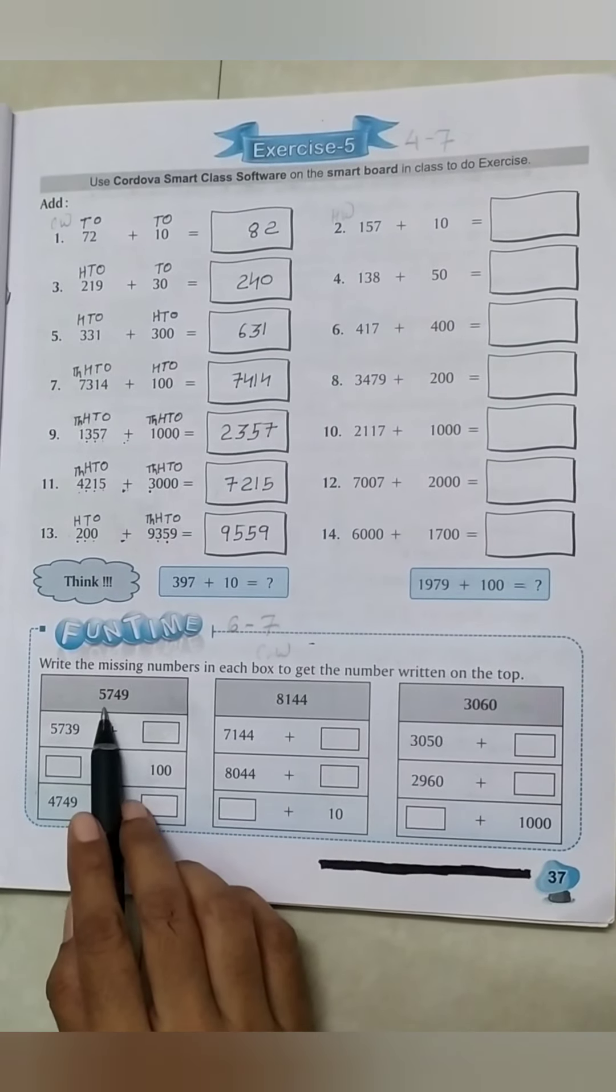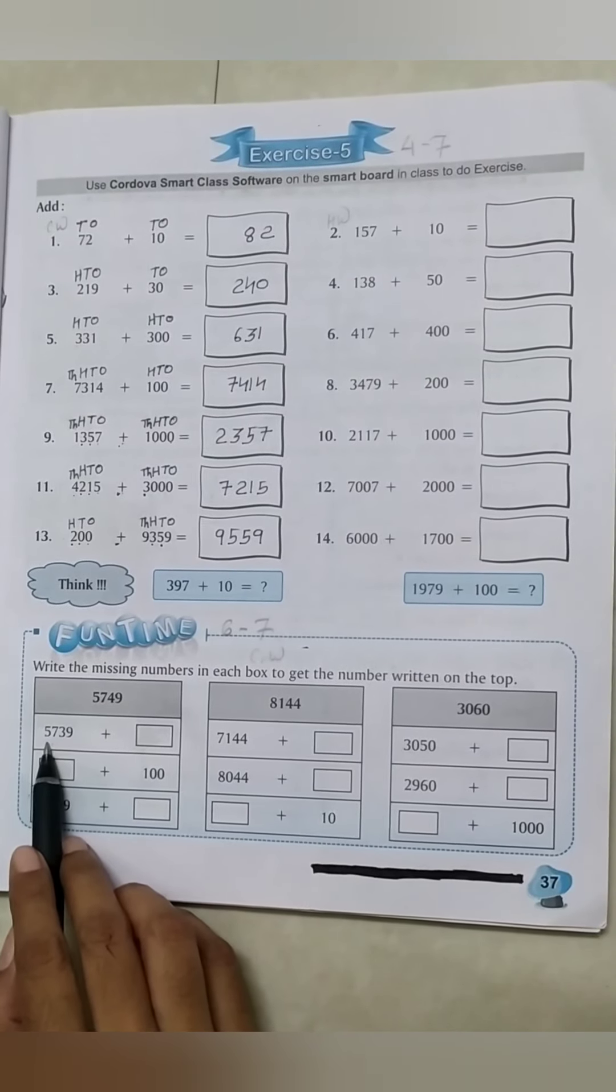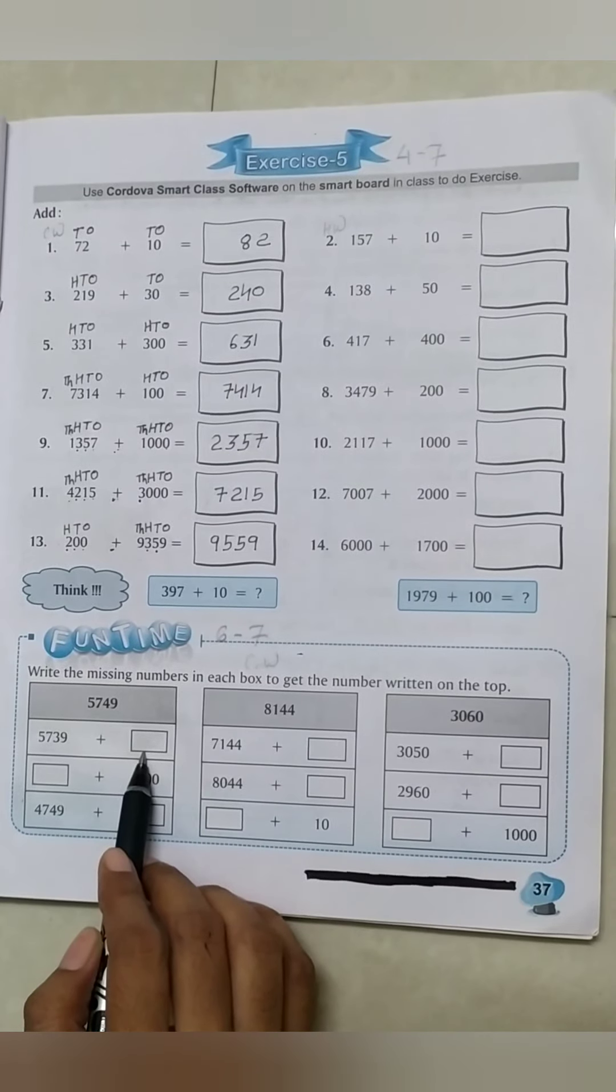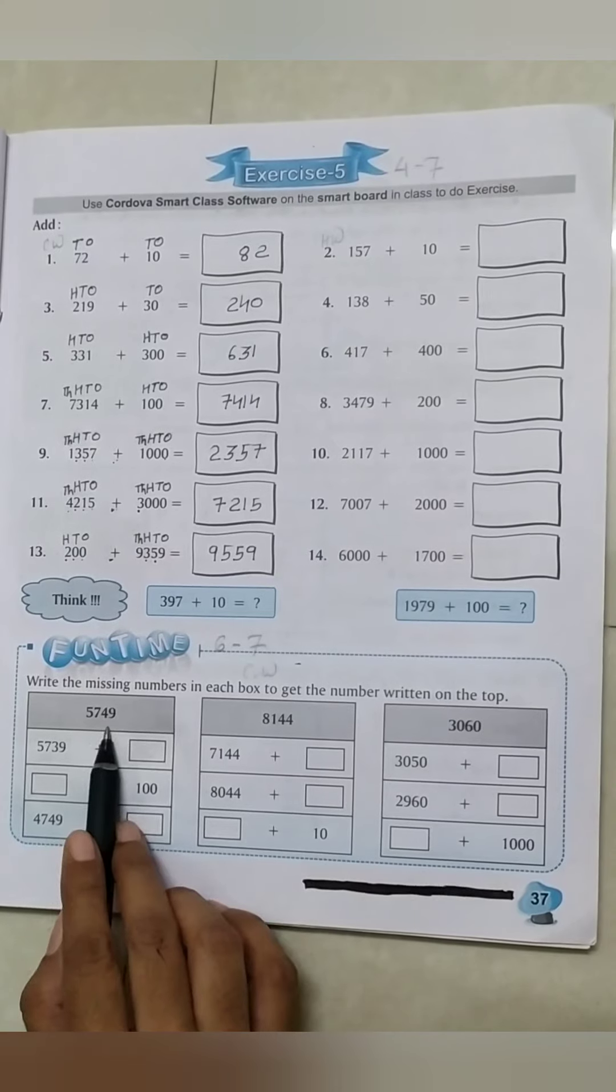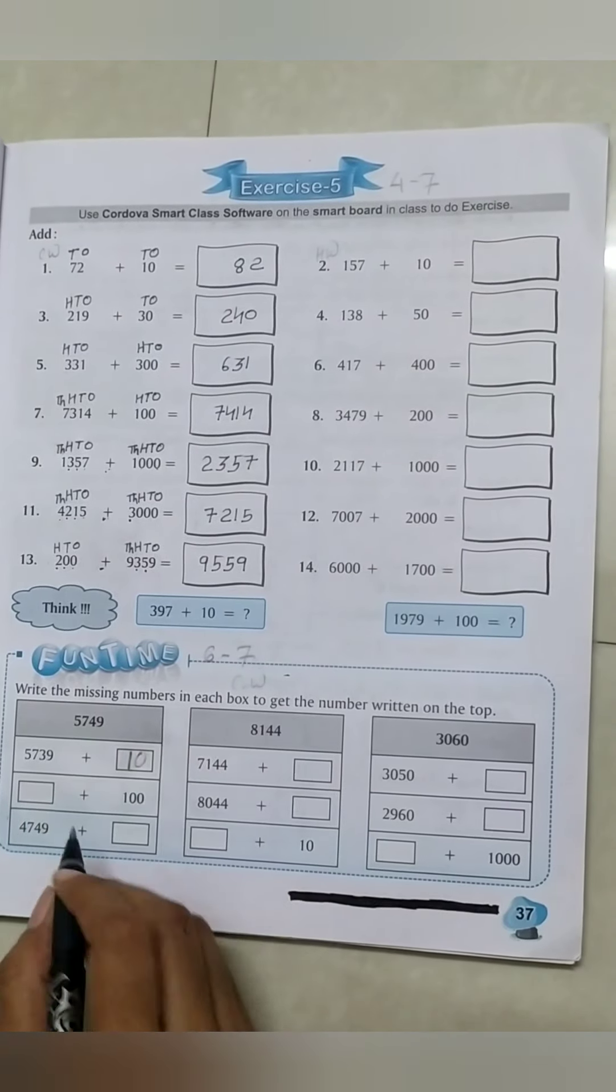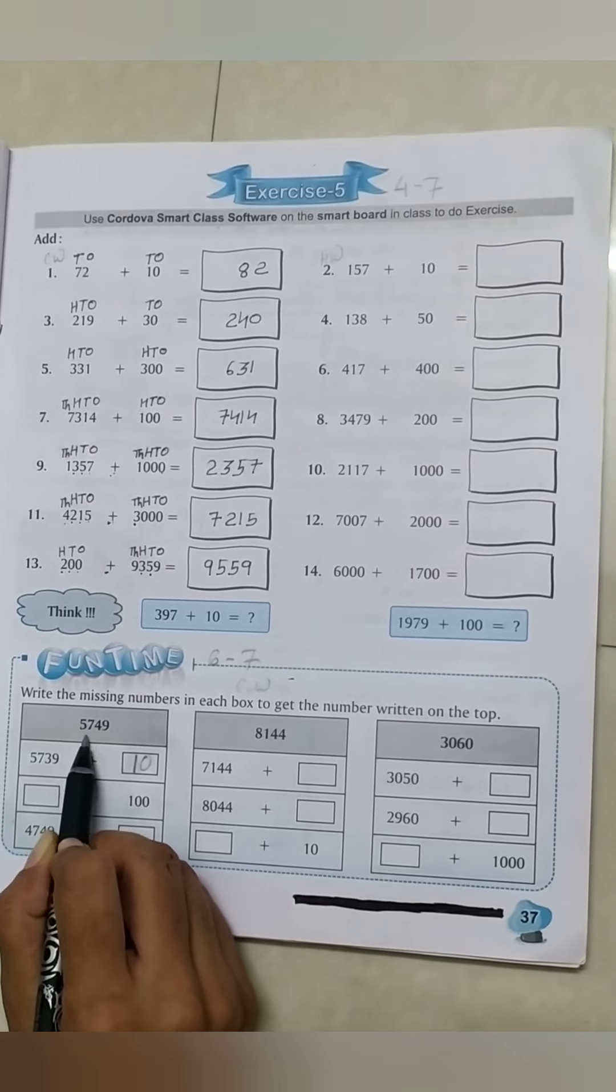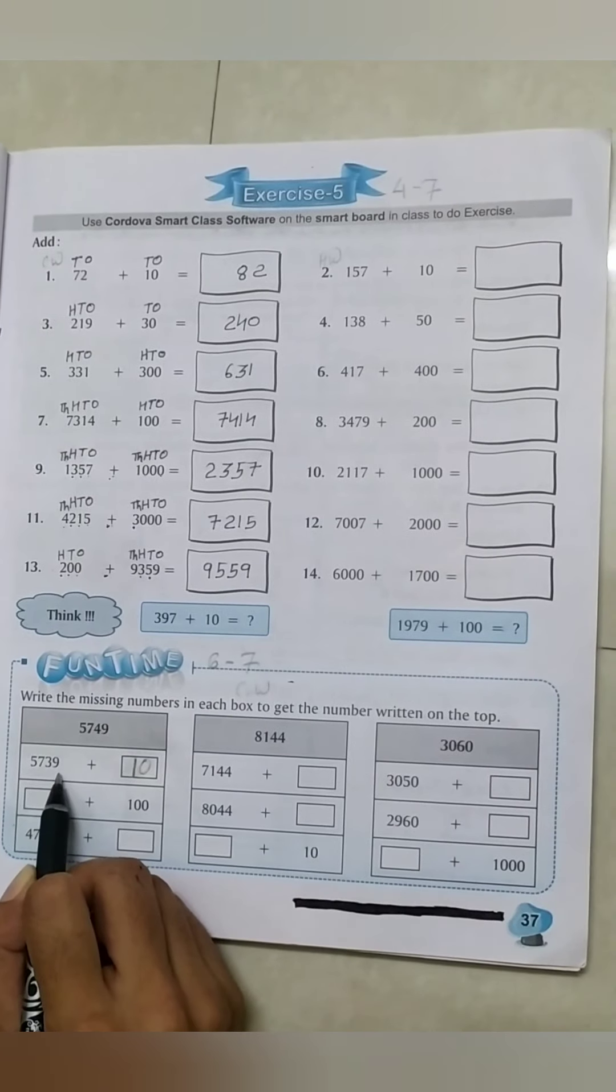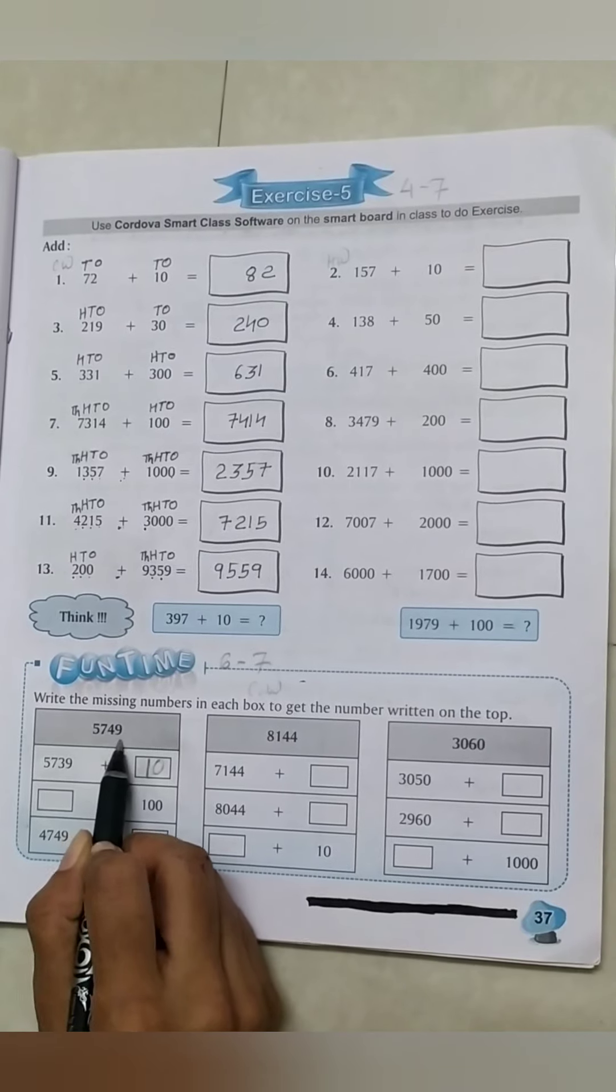First question: 5749. First blank's number, 5739 plus blank. How many numbers do we add to get the answer 5749? We add 10, so 5739 plus 10 equals 5749.